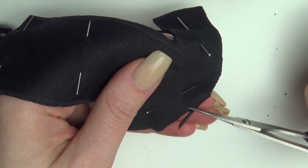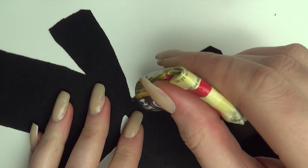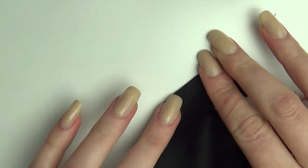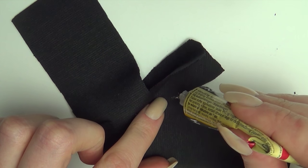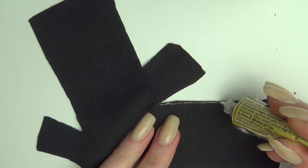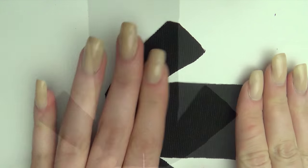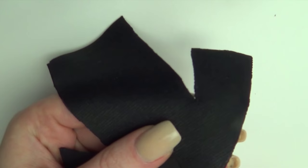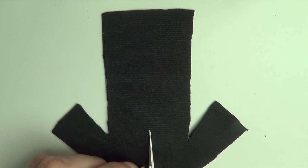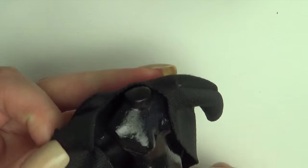Cut an opening in the top of the neckline. Glue it right side to right side with fabric glue. Cut down the front for the opening. Turn it right side out and check that it fits the doll.